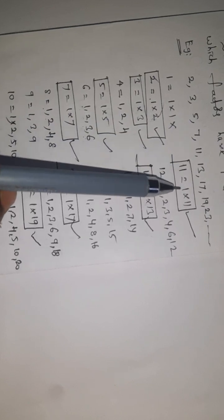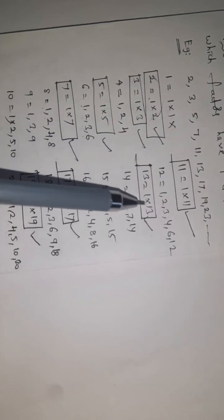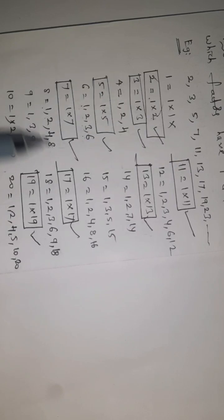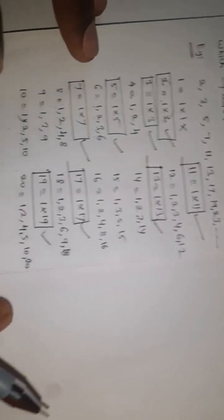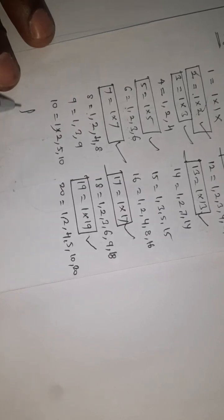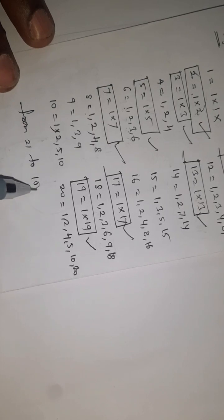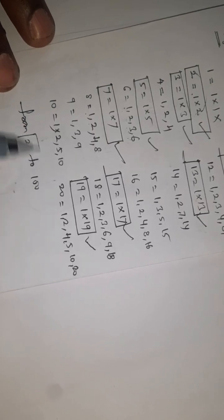These numbers - 11 is 1 times 11, 13 is 1 times 13, 17 is 1 times 17. All these numbers up to 100, you have to practice identifying the prime numbers yourself. From 21 to 100, you can identify them yourself.